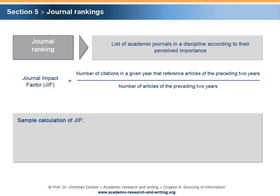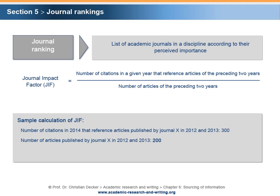A sample calculation illustrates the logic of the JIF. The number of citations in 2014 that reference articles published by journal X in 2012 and 2013 is 300. The number of articles published by journal X in 2012 and 2013 is 200. Hence, the JIF of journal X in 2014 is equal to 300 divided by 200, which equals 1.5. It has to be noted that one should use journal rankings carefully, as their validity and reliability has been questioned by academia.